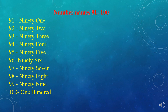Here you can see number names 91 to 100. So let's start: 96, 97 — NINETY-SEVEN; 98 — NINETY-EIGHT; 99 — NINETY-NINE. And the last number is 100 — ONE HUNDRED. So children, these are the number names. You have to recite all the number names.